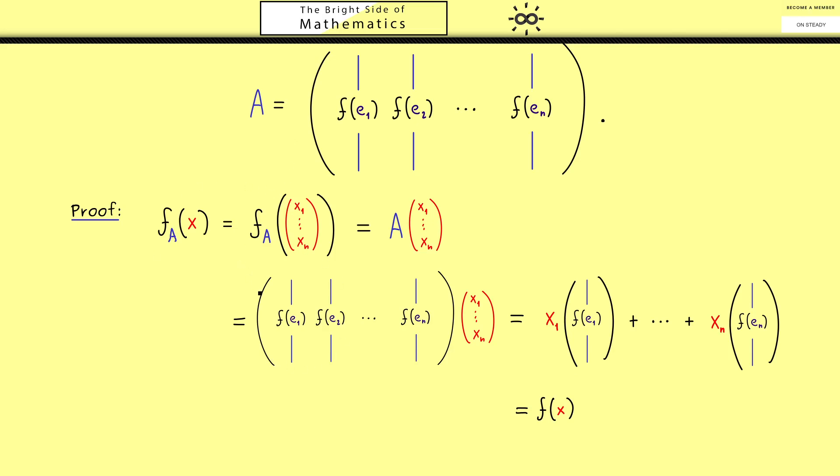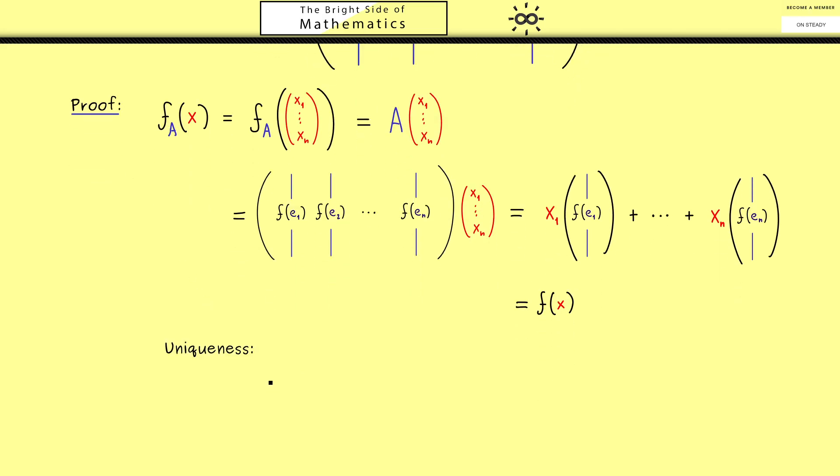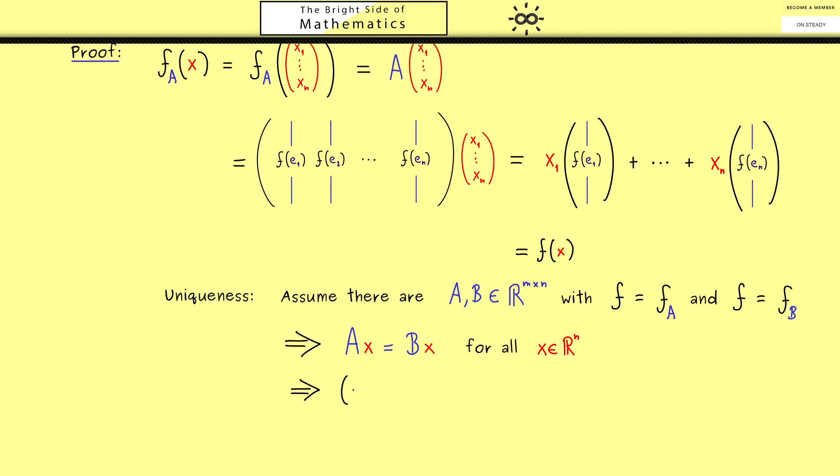Therefore the only thing missing now is the proof of the uniqueness. Indeed often one can do such a proof by simply assuming that we have two different matrices with the same property. Or more precisely we take two matrices A and B and show that they are the same. So what we put in is that f is f_A and f is f_B. And of course this immediately implies that f_A is the same as f_B. More concretely this means that A applied to vector x is the same as B applied to vector x. And of course this holds no matter which vector x in R^n we choose. Ok then in the next step here we can bring Bx to the left hand side. Then by using the properties of the matrix product we can write it as (A-B) times x. And now this is equal to the zero vector in R^m.